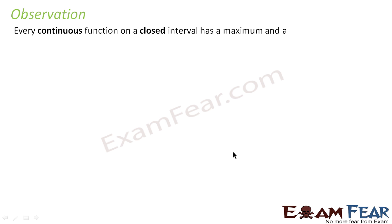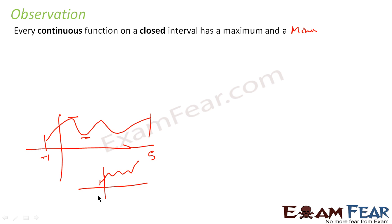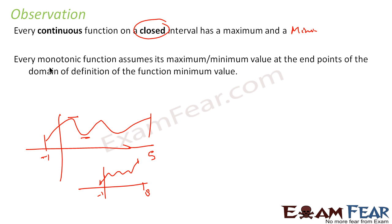Let us summarize the observations. Every continuous function on a closed interval has a maxima and a minima. So if I have a continuous function on a closed interval, say minus one to five, it will have a maxima and a minima. Even if the interval is minus one to eight, this function also has a minima and a maxima. So if you take any closed interval and a continuous function, it has to have a maxima and a minima.